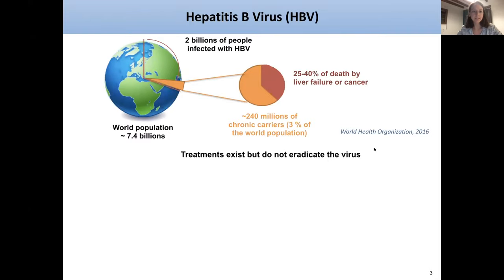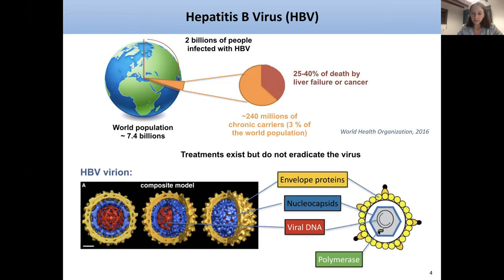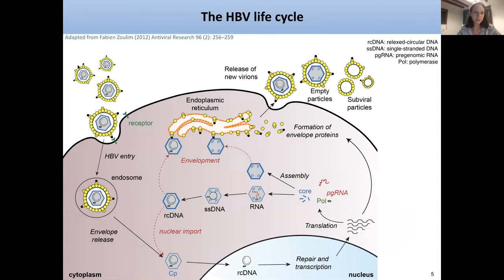HBV is still a major health problem because, despite an efficient vaccine, it still infects 2 billion people in the world, leading to around 1 million deaths every year. There are some treatments, but they don't manage to completely eradicate the virus. The virus is composed of DNA attached to a polymerase, protected by a capsid, which is surrounded by envelope proteins and lipids. The core protein can package the pre-genomic RNA with the polymerase to make the mature capsid, but it can also assemble as an empty capsid.